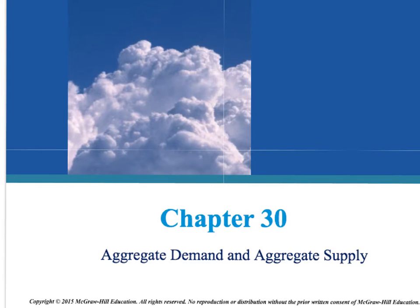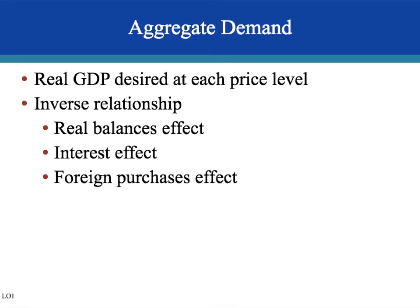Chapter 30: aggregate demand and aggregate supply. This is the model we're going to use to show changes in the economy and what they lead to. We're going to model recessions and expansions, short run, long run, and also how different fiscal and monetary policies can help correct economic fluctuations.